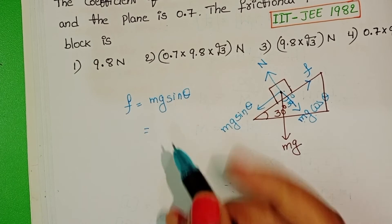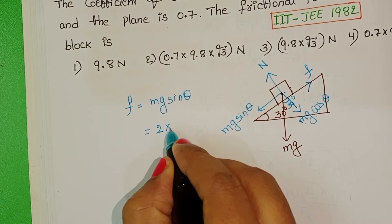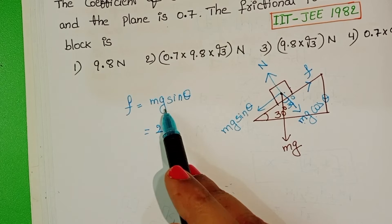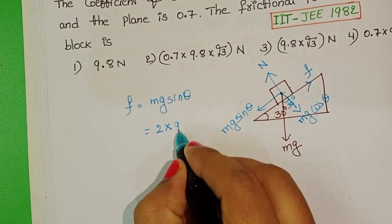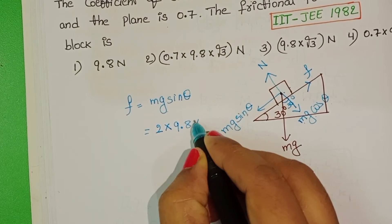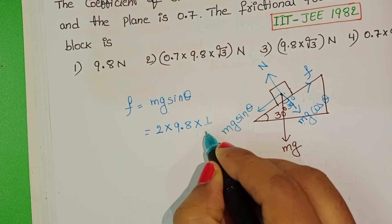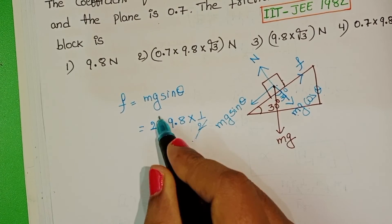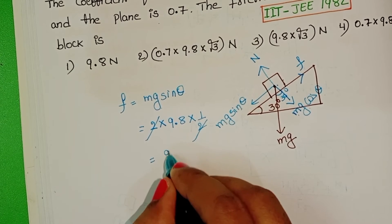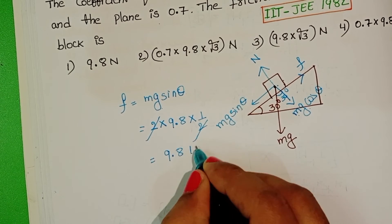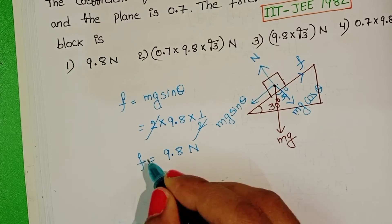We know mass of the block, that is 2 kg. Acceleration due to gravity, take 9.8. Sin theta, sin 30 degrees value, 1 by 2. Here, 2 gets cancelled. So frictional force equals 9.8 newton.